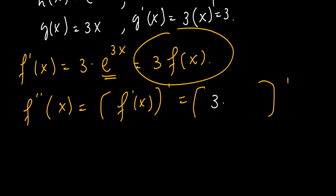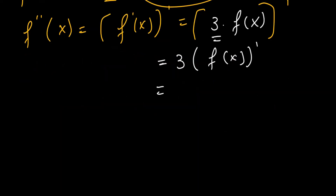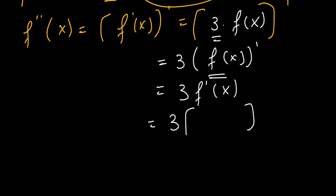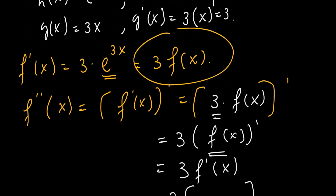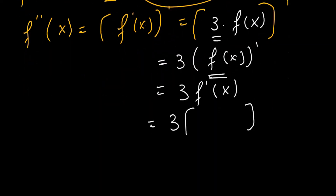So we have 3 times f(x) — here 3 is a constant, so we can take it out. The derivative of f(x) is 3 times f'(x), which is 3 times e^(3x). So f'(x) = 3e^(3x).